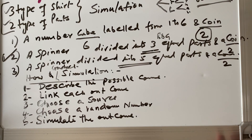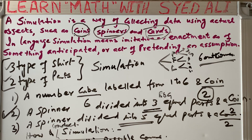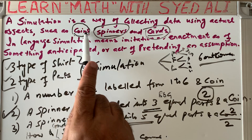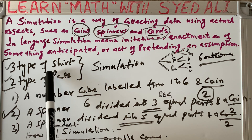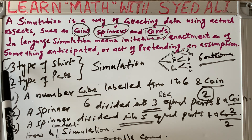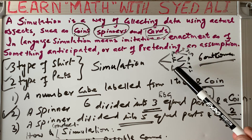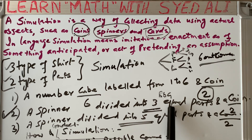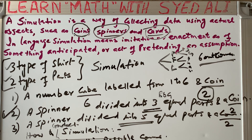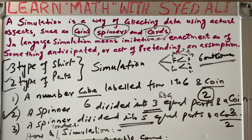We have to repeat the process to see that each and every outcome of the real situation is simulated by the actual object — a coin, spinner, or cards. The situation from the last video: a customer has the option of selecting 3 types of shirts and 2 types of pants; pants were grey and blue, shirts were plain, frill, and lace — giving 6 outcomes. So we go with a spinner divided into 3 equal parts and a coin as the simulation. If you like the video, please subscribe to my channel and press the bell icon. Thank you for watching.